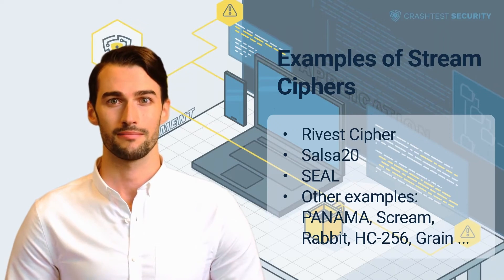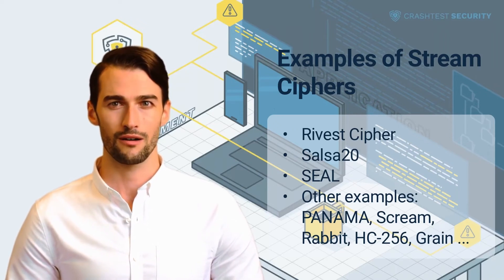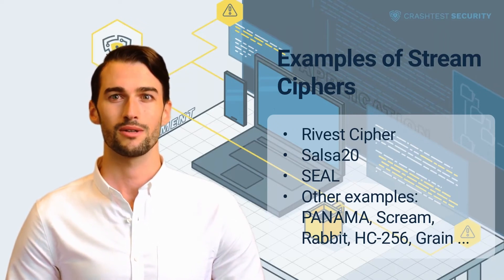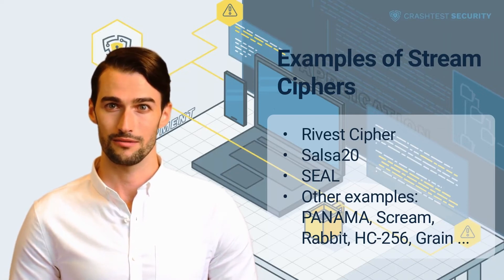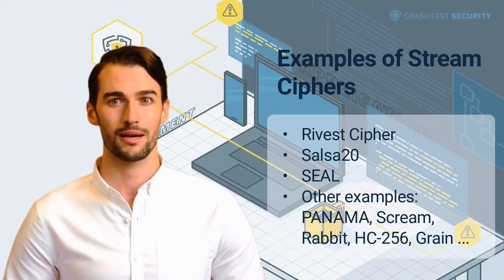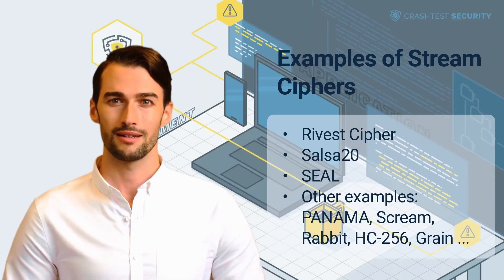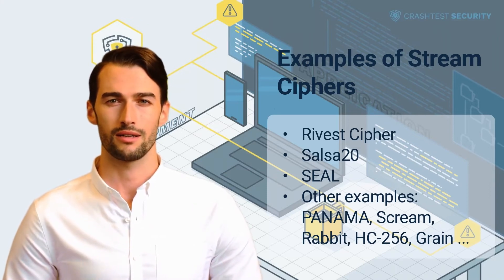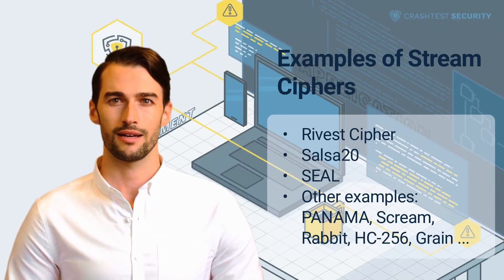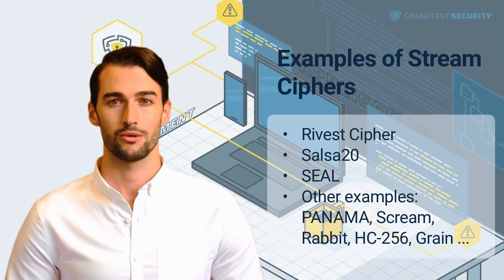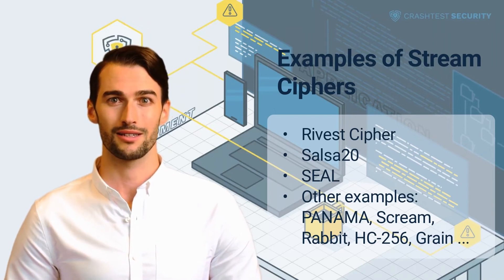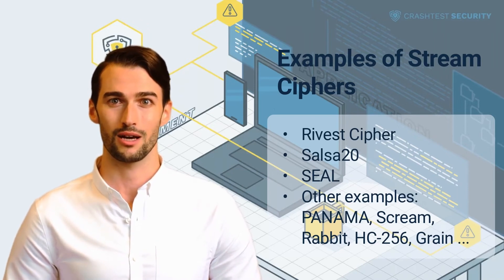Salsa20 is an efficient, modern encryption cipher that relies on an expansion function to produce the encryption keystream. In addition, Salsa20 depends on a core function that maps the key, a nonce digit, and constant vectors extracted from the expansion function to the keystream using add-rotate XOR (ARX) operations.